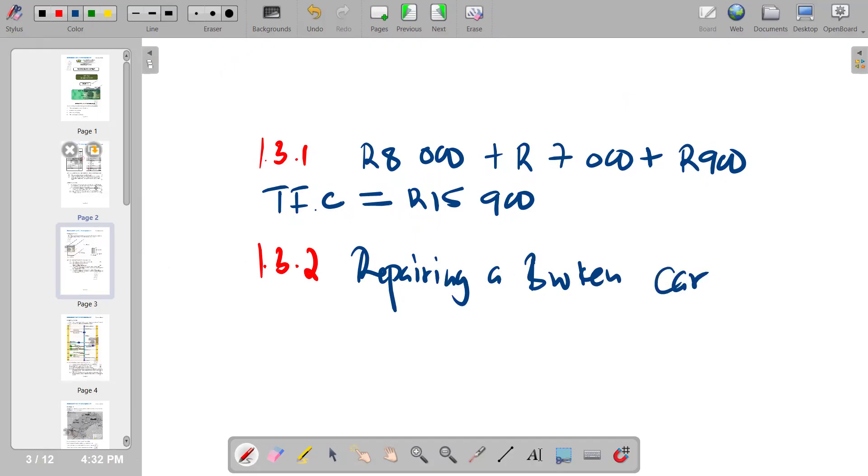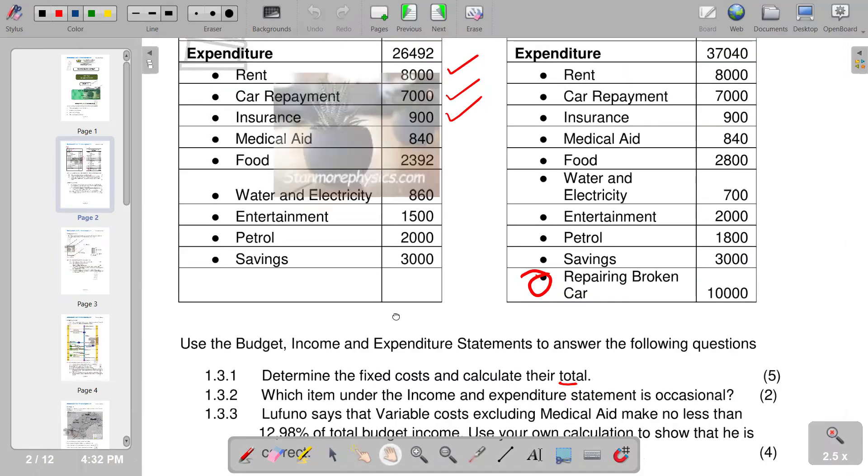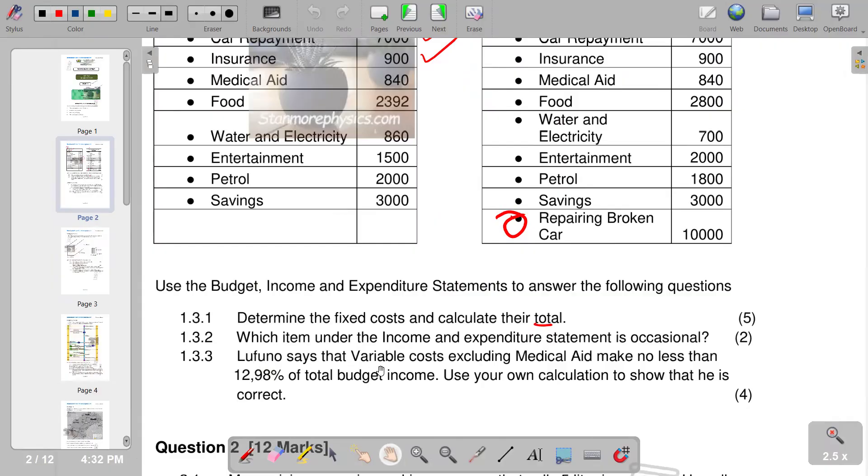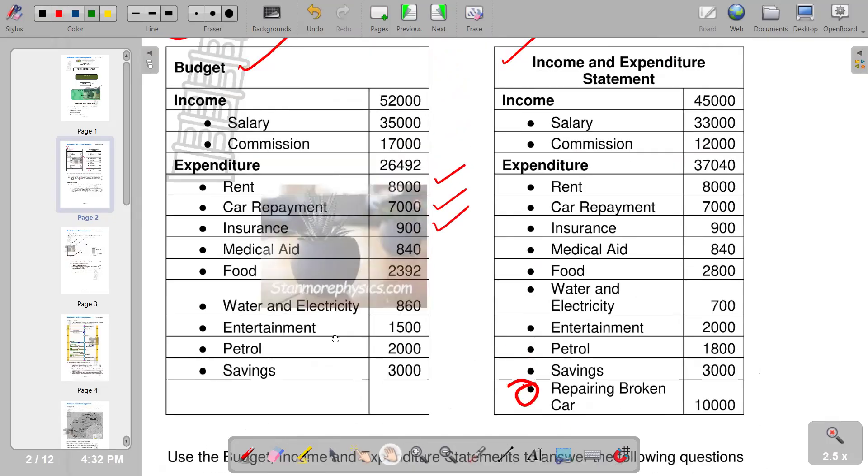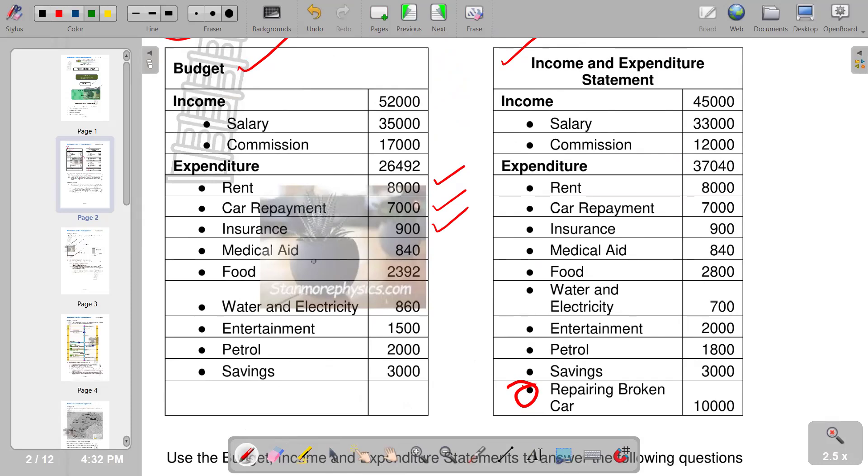Moving on to the next question, Lufuno says that variable costs excluding medical aid make no less than 12.98 percent of total budget income. Use your calculation to show that he is correct. We need to identify the variable costs as indicated in the budget, but we are not going to include medical aid as indicated in the question.